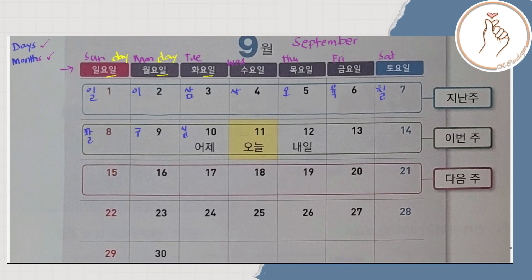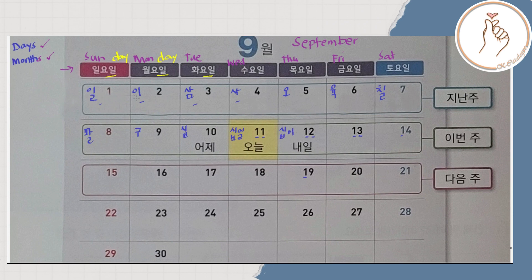I'll do a quick review so you can remember again. So 10 is ship. From 11 to 19, the first number is 1, which has a value of 10. So the first syllable of the word is always ship. The second figure — 1, 2, 3 — goes back to il, i, sam, sa. So ship+il becomes 11 (ship-il), 12 is ship-i, 13 is ship-sam, 14 is ship-sa, 15 is ship-o, and so on.